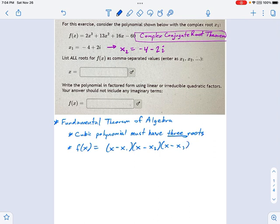I don't know what x3 is yet, we're going to figure that out. But I do know x1 and x2. It's going to be x minus negative 4 plus 2i, and then x minus negative 4 minus 2i, the conjugate of the first one. And then we have this x minus x3 thing we'll figure out.